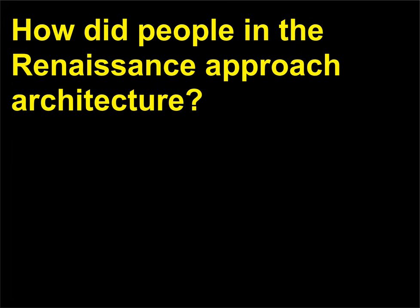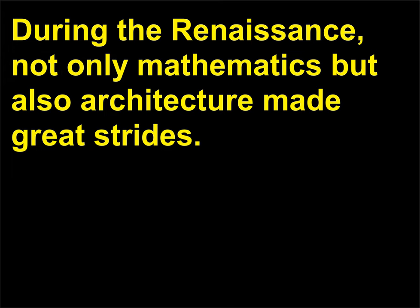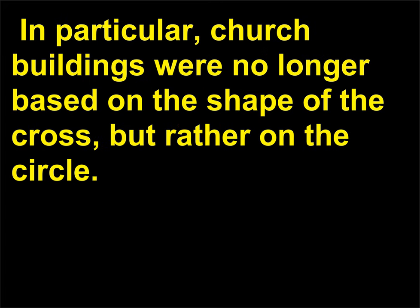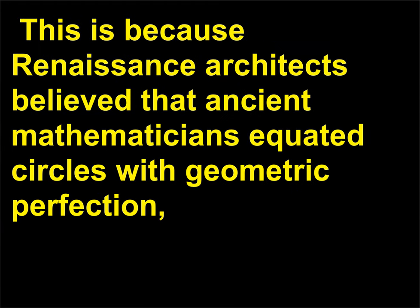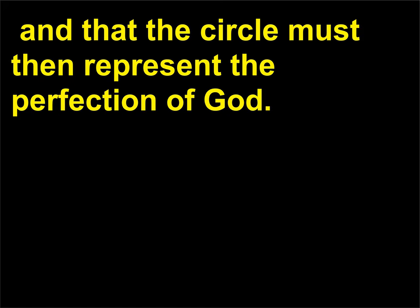How did people in the Renaissance approach architecture? During the Renaissance, not only mathematics but also architecture made great strides. In particular, church buildings were no longer based on the shape of the cross, but rather on the circle. This is because Renaissance architects believed that ancient mathematicians equated circles with geometric perfection, and that the circle must then represent the perfection of God.